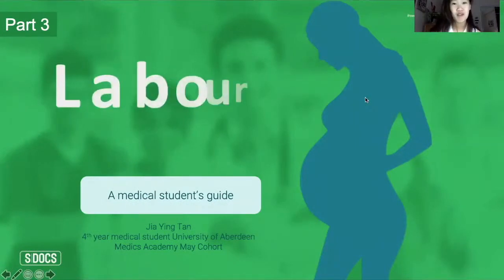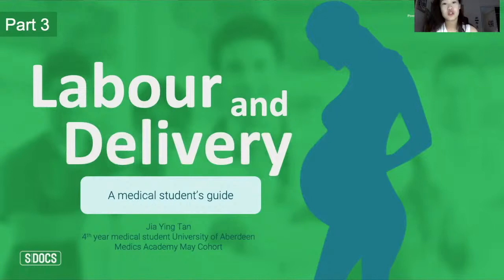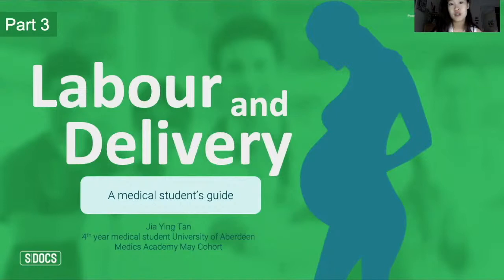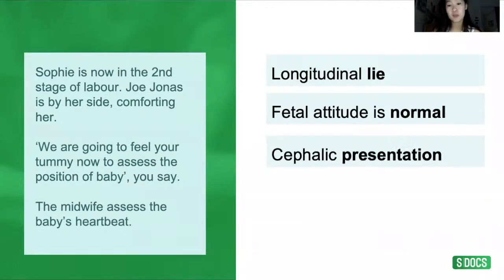Hi guys, my name is Jantan and I'm a fifth year medical student at the University of Aberdeen. This is part three of the labor and delivery series brought to you by Medics Academy under the virtual elective program. We've gone through stages one and two. To recap: we followed Sophie Turner through her pregnancy. We left off in stage two, where an obstetric exam found normal findings. Sophie is now pushing with all her might.